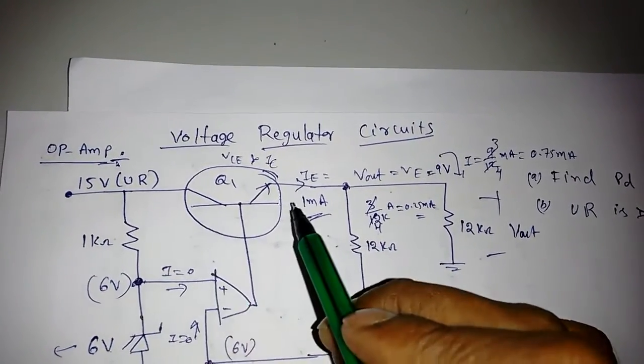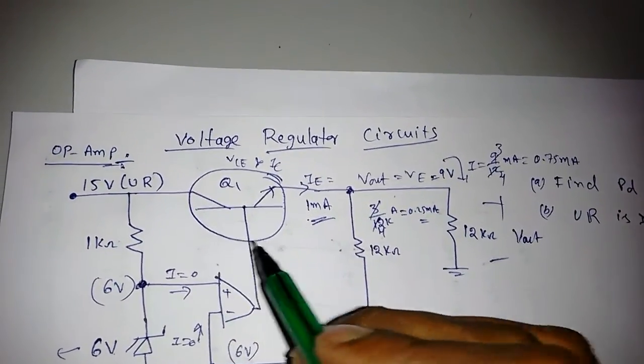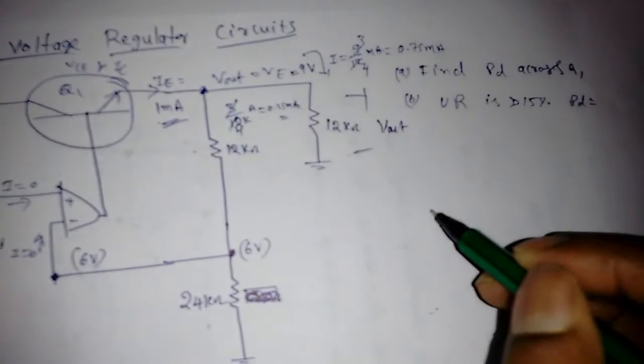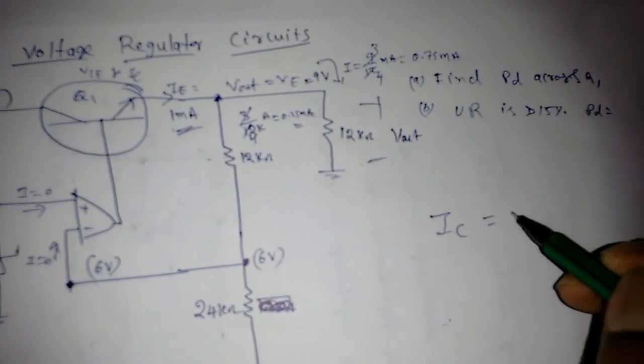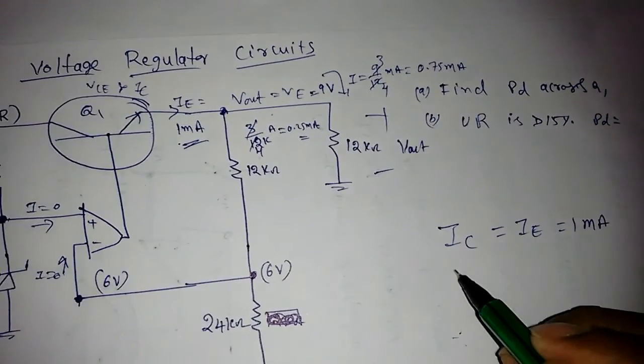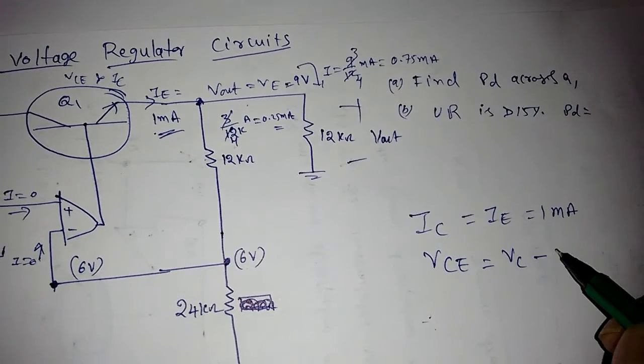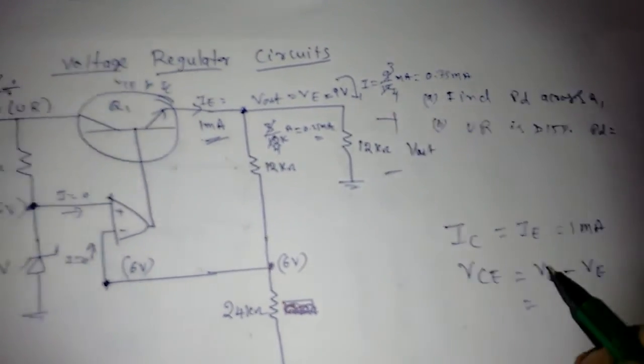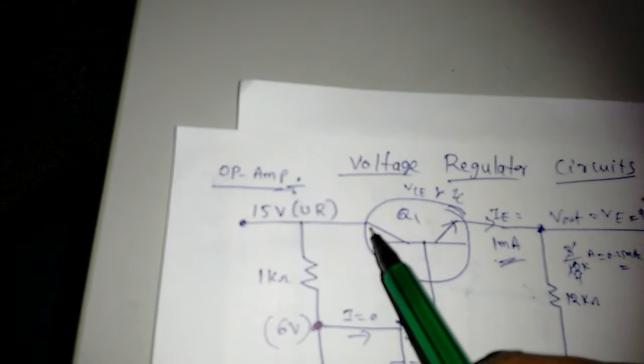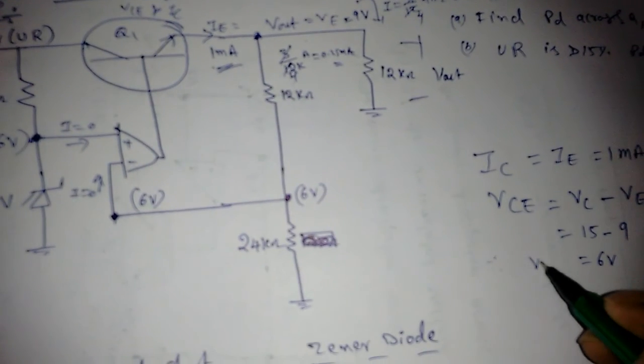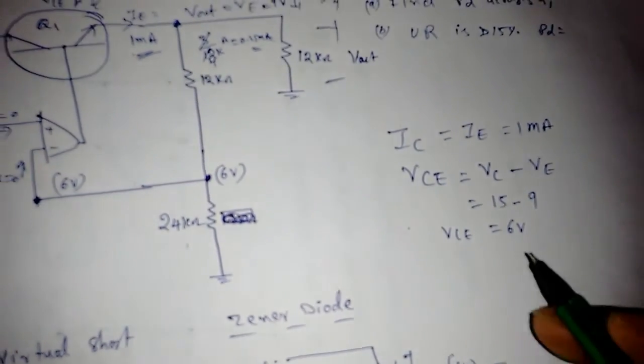Beta is not given, so I can find like this: IC is equal to IE. What is VCE? I can find the voltage difference between collector and emitter. If you observe this circuit, the collector is connected to the 15 volt supply, so you can directly find 15 minus VE, which we got as 9 volts. So it is 6 volts. VCE we got is 6 volts, IC we got is 1 milli ampere.